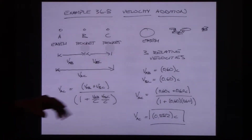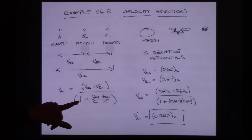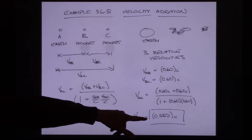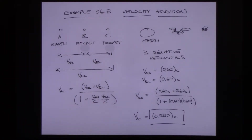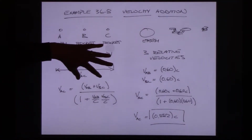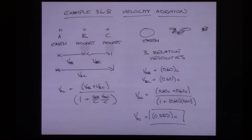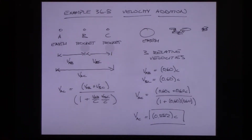That formula comes from foundational results in special relativity having to do with how space and time are constructed. Plugging in the numbers, I find that v_AC equals 0.882c — it comes in less than c. You can try your own numbers: if you put in 0.9 and 0.9, the numerator is 1.8 but the denominator becomes 1.81, so it works. None of the relative velocities are ever going to be greater than c.